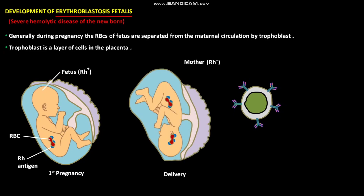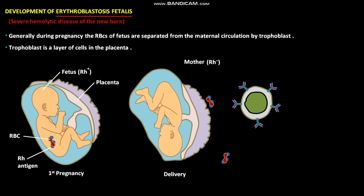At the time of delivery, the placenta separates from the wall of the uterus. As a result, larger amounts of RBCs from the umbilical cord of the fetus enter the maternal circulation. These fetal RBCs activate the inactive Rh-specific B cells.